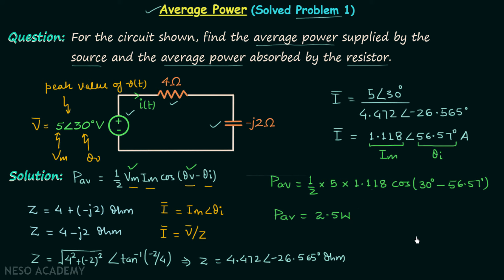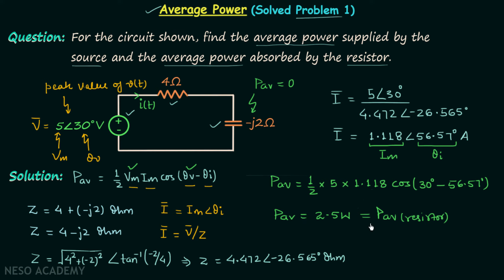Moving on to the next part of the question, we are required to find the average power absorbed by the resistor. In this network we have one resistor and one capacitor, and we know a capacitor will not absorb any average power. Therefore, the average power delivered by the source will be absorbed only by the resistor — the same 2.5 watts. So this is our answer.